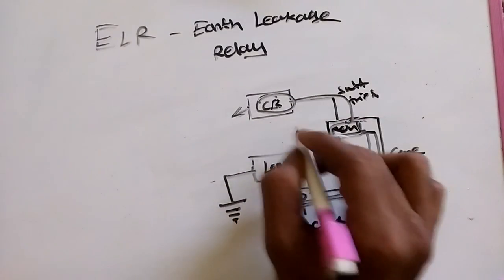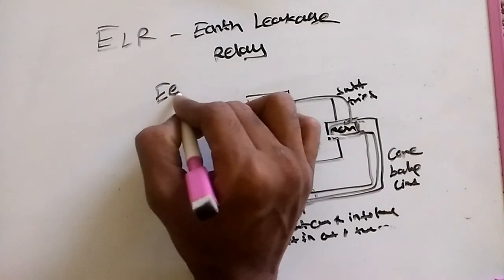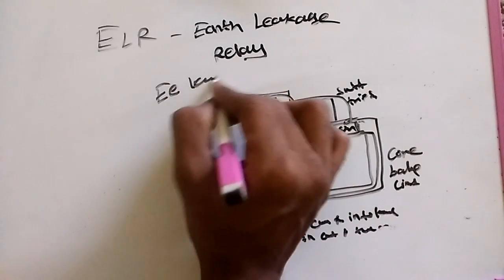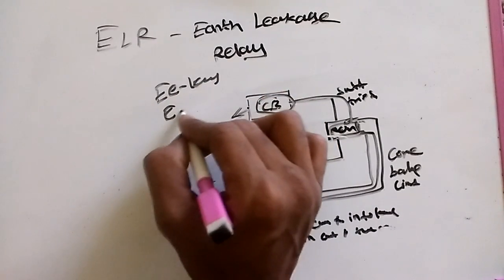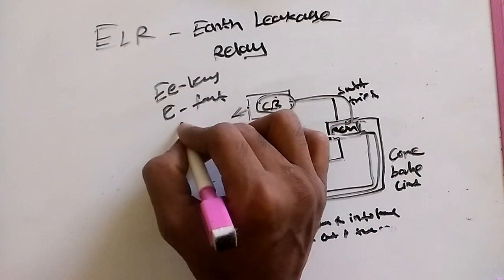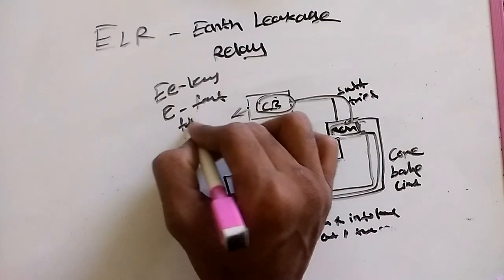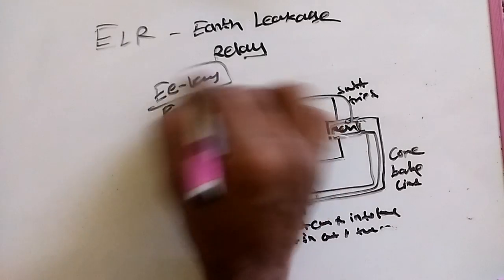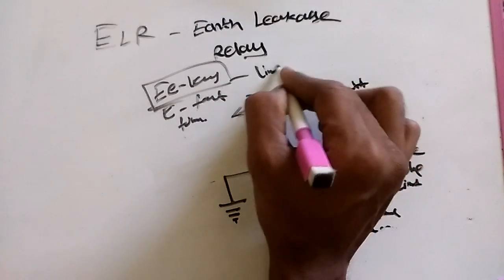What's the meaning of earth leakage and earth fault? Earth fault means some leakage current flows to the body. Earth leakage is when live supply connects to metal body.